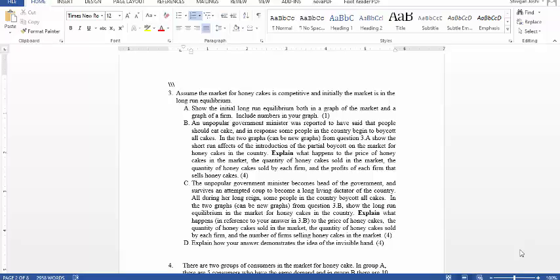Hello, I am looking at the third question of a 2014 exam from the test Aleph. The third question says assume that the market for honey cakes is competitive and initially the market is in long run equilibrium. Show the initial long run equilibrium both in a graph of the market and a graph of a firm. Include numbers in your graph.